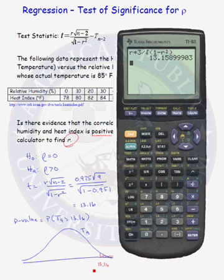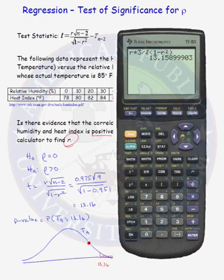Now we're ready to calculate the p-value. The p-value is the probability that a t-distribution with nine degrees of freedom is greater than the test statistic of 13.16. We have a t-distribution with nine degrees of freedom; since it's a one-sided test, the shaded region to the right represents our p-value.